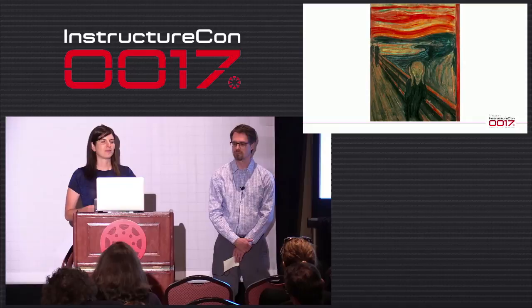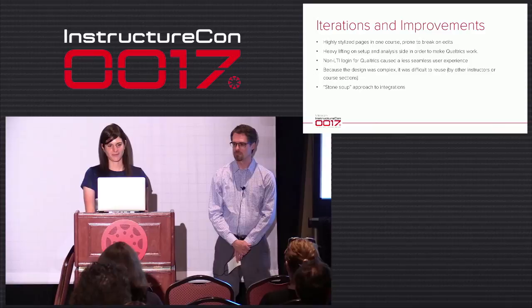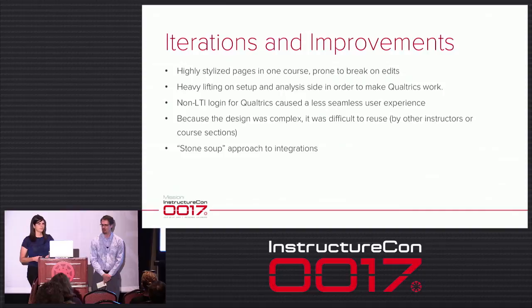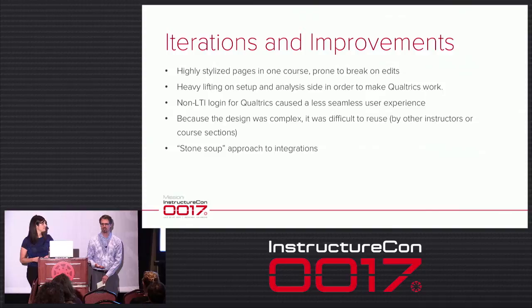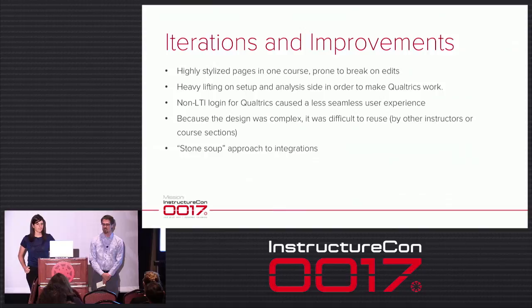It's also why we want to improve on that approach through built-in tools that support this model. Some of the iterations and improvements we're thinking of: first, we found that the first really visually appealing page is really prone to breaking, so we're looking at some tools to help with the design so that faculty, when they go in and make a small tweak, don't break it and have to call a designer. All that heavy lifting in terms of setting up the Qualtrics questions with all the tagging, and then the analysis, we really feel like we can improve on that.